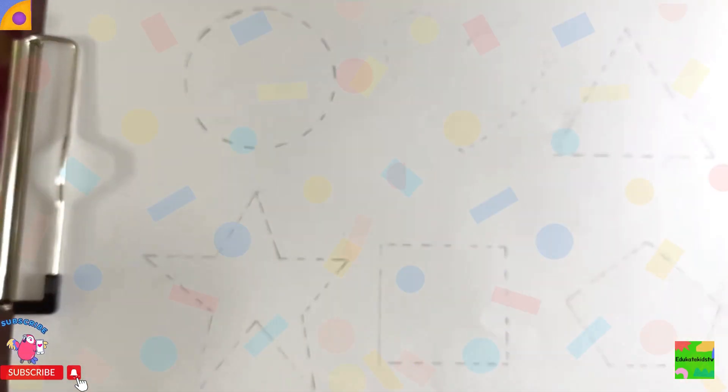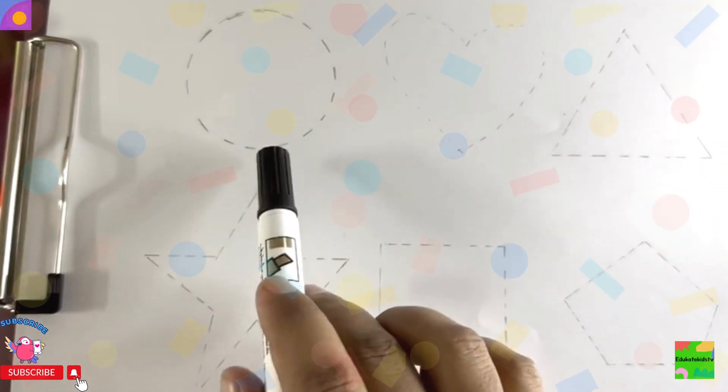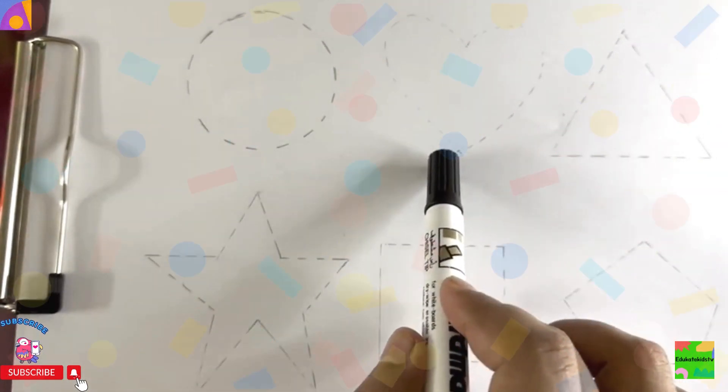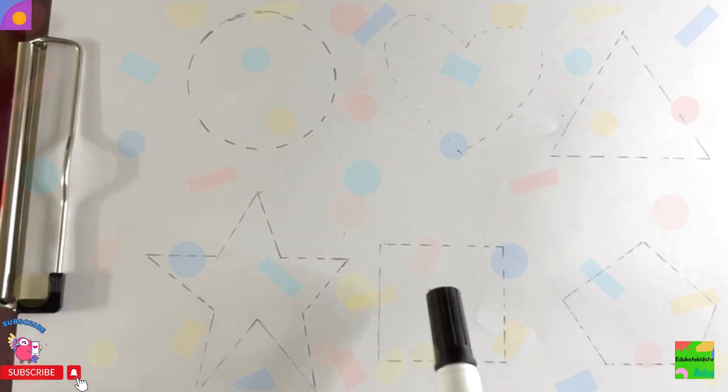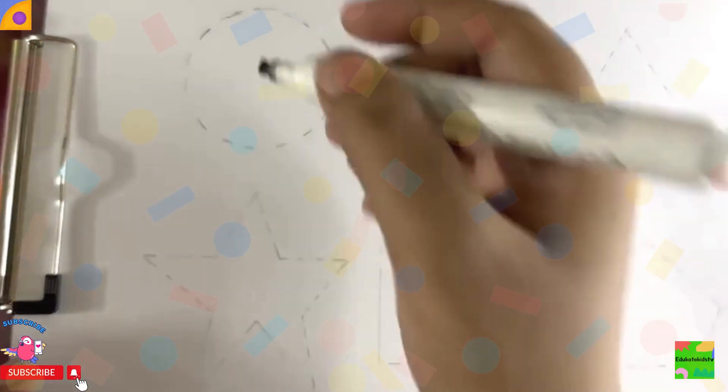Now this is my black marker and I'm going to draw these shapes. Let's learn them. Circle, heart shape, triangle, star, square, pentagon. Now come on, let's draw it.